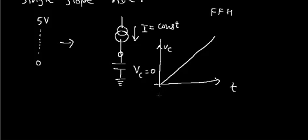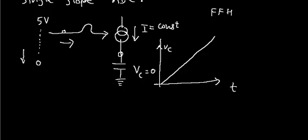Now, we take advantage of this because we make a controlled current source somehow — we build a circuit which will take this input and convert it into an appropriate current. If this happens, the input voltage is converted into current. If the input voltage is less, the current will be less and the charging rate will be less. If the input voltage is higher, the current will be more and the charging rate will be more.